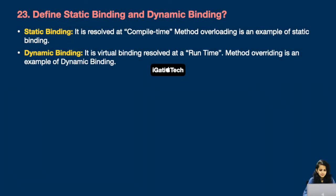Next: Define static binding and dynamic binding. Static binding is resolved at compile time — method overloading is an example of static binding. Dynamic binding is virtual binding resolved at runtime — method overriding is an example of dynamic binding.